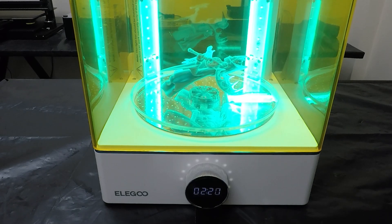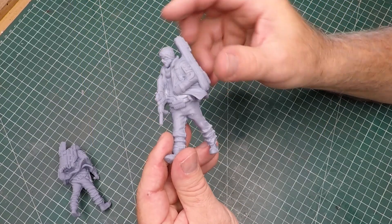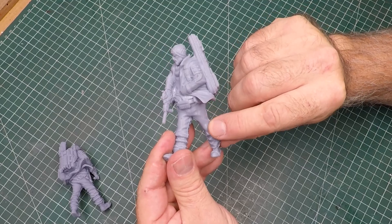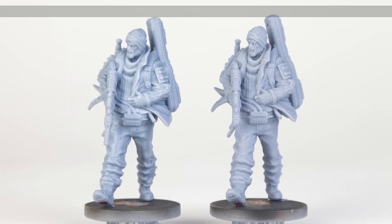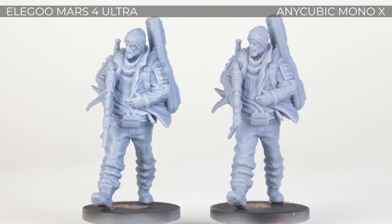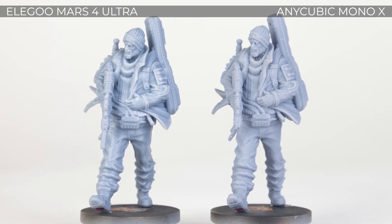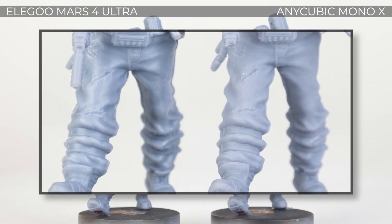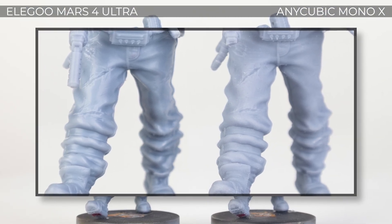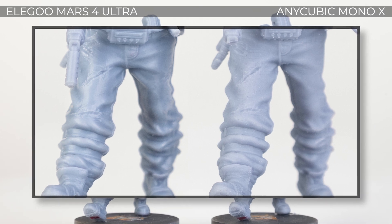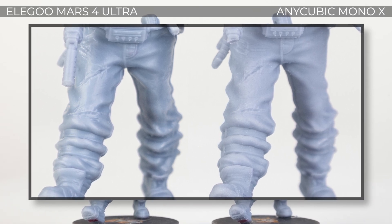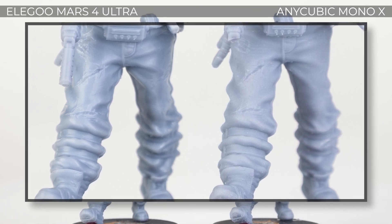With the printing all done let's see how well it did. I'll be comparing the prints between the Elegoo Mars 4 Ultra as well as the Anycubic Mono X. You can see on the left hand side how much more crispy Elegoo is - where the tears are on his pants a lot more detail has appeared as well as the complete lack of any printing lines on the Elegoo.